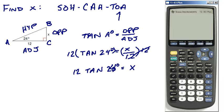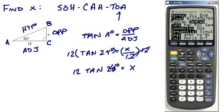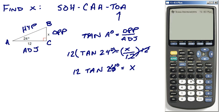Use a graphing calculator. Mode's in degree. So we get 12 times the tangent of 24 degrees gives us 5.34.